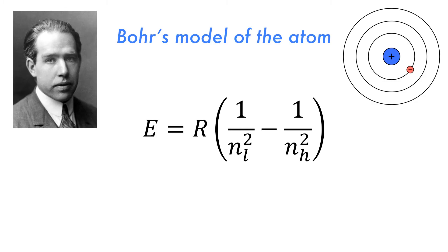Expanding on the findings of Balmer, in the Bohr model of the atom, the energies of the light emitted or absorbed can be determined from the following equation, with the energy equal to R times 1 over the lower principal quantum number squared, minus 1 over the higher quantum number squared.